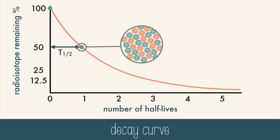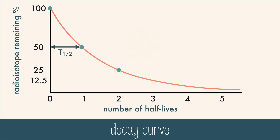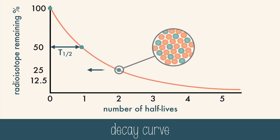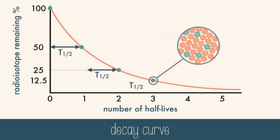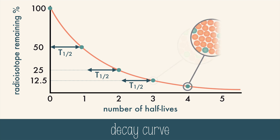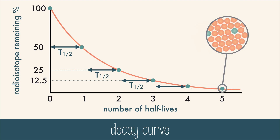As that same amount of time passes again, half of the remaining atoms of the isotope will decay. At the second half-life, 25% of the atoms remaining are the original isotope. At the third half-life, only 12.5% of the original radioisotope remains. This pattern continues until all of the radioisotope has decayed into the daughter isotope.